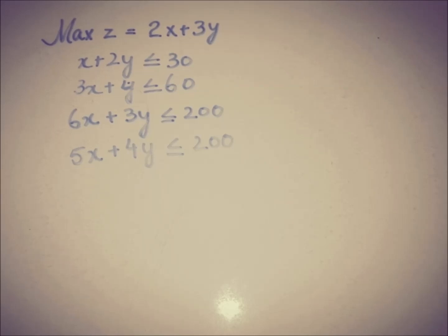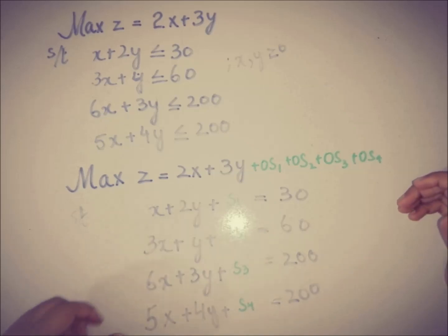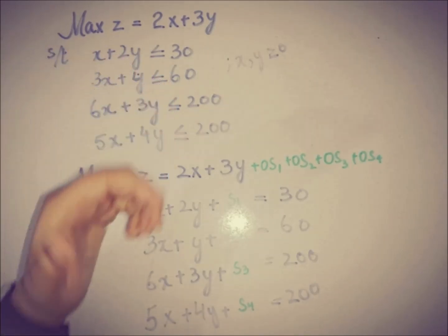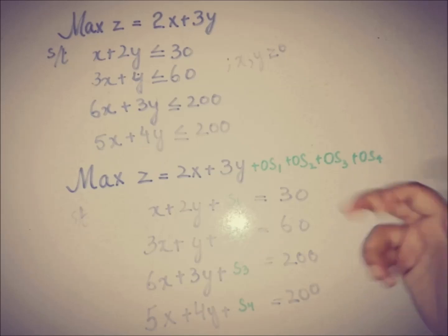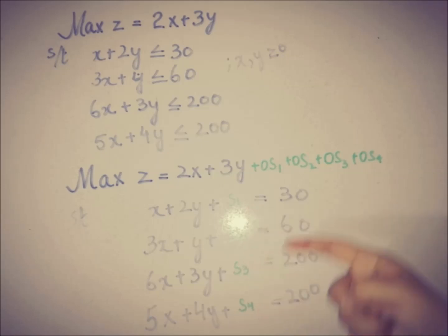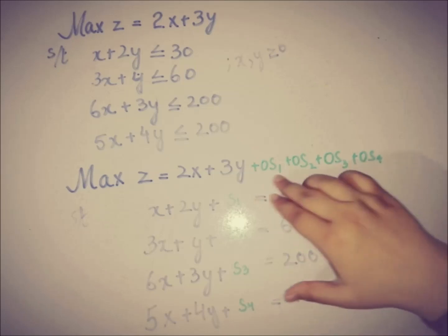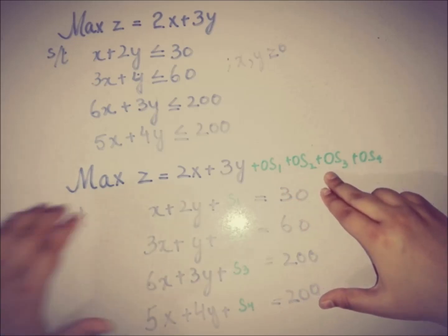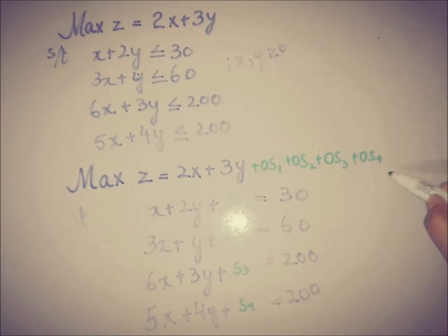Now for the simplex form, we have to write this problem into standard form. The first step is to look at the inequality sign — all constraints have a less-than-or-equal-to sign. So we add a slack variable to each constraint to convert it to equality form. I am also using zero coefficient with all of the slack variables in the objective function. This is the standard form of the problem, and all slack variables are also non-negative.